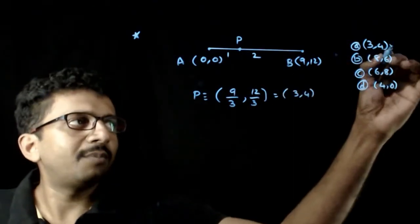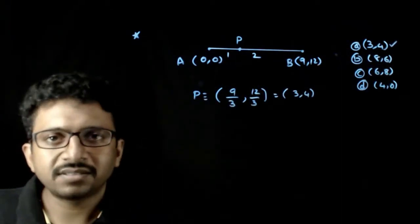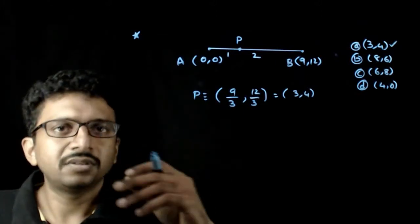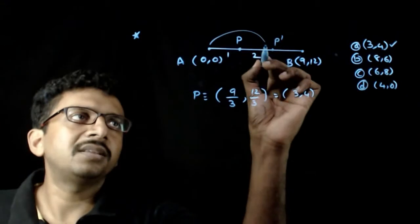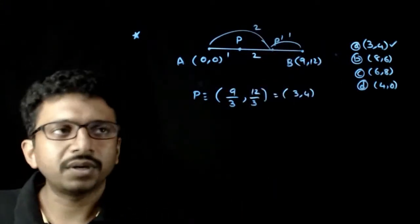This is one point, the first point which divides AB in the ratio 1 is to 2. If you want the other point P dash, that is the point which divides AB in the ratio 2 is to 1.